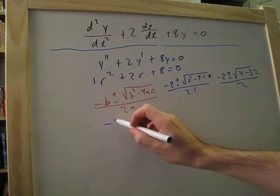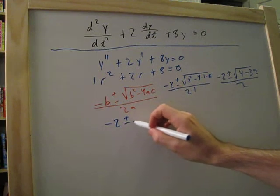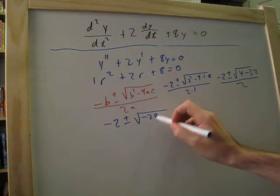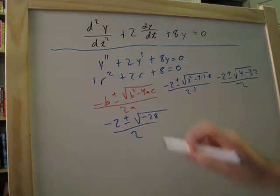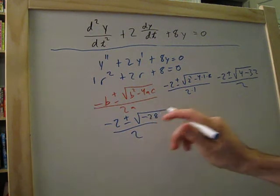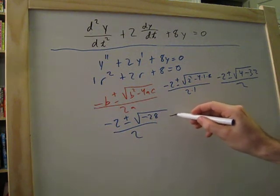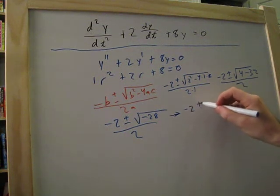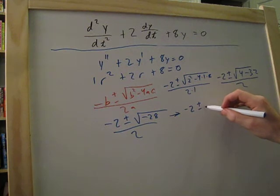We'll get minus 2 plus or minus negative 28 over 2. Okay, and now we want to make this positive again. So, arrow over minus 2 plus or minus.